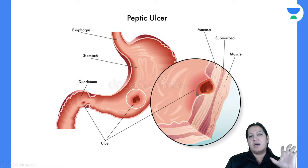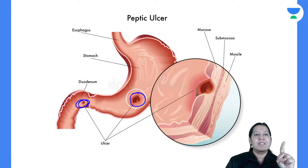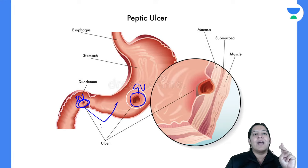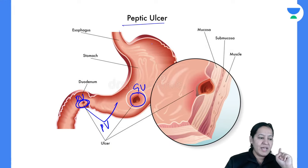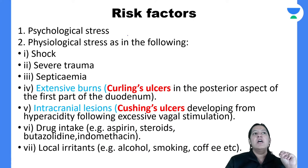Now where does it occur? It occurs at two locations — one in the stomach and one in the duodenum. In the stomach it is known as gastric ulcer. In the duodenum it is known as duodenal ulcer. Both together are known as peptic ulcer. So basically peptic ulcers are of two types based on location: gastric ulcer and duodenal ulcer.